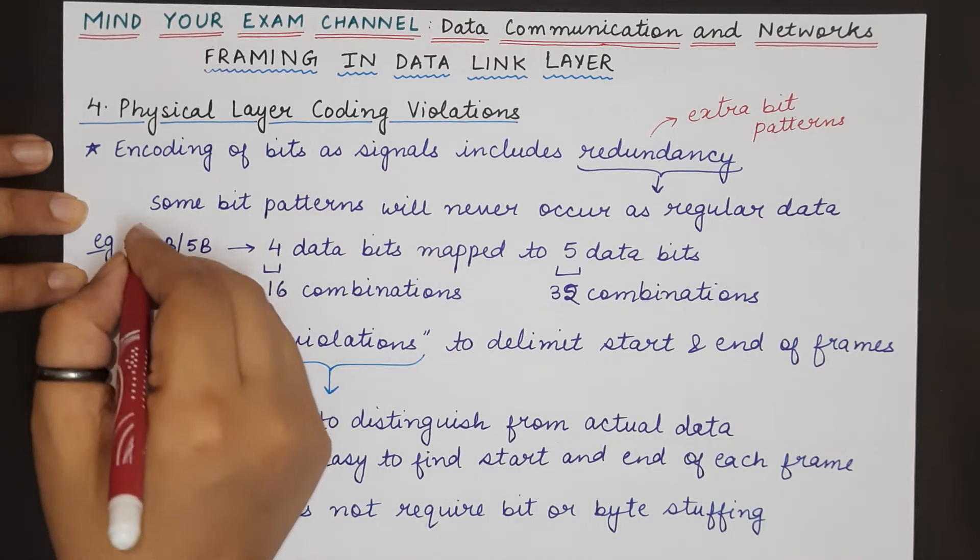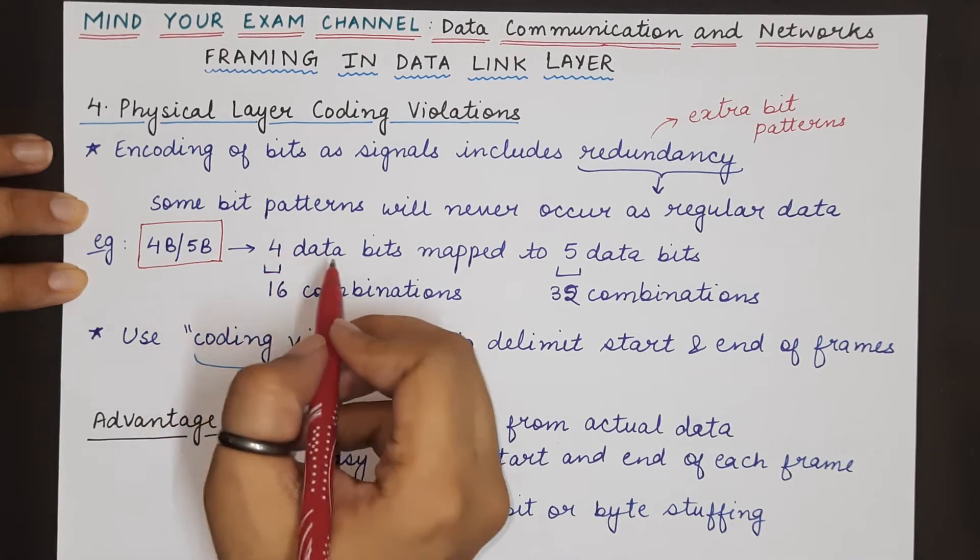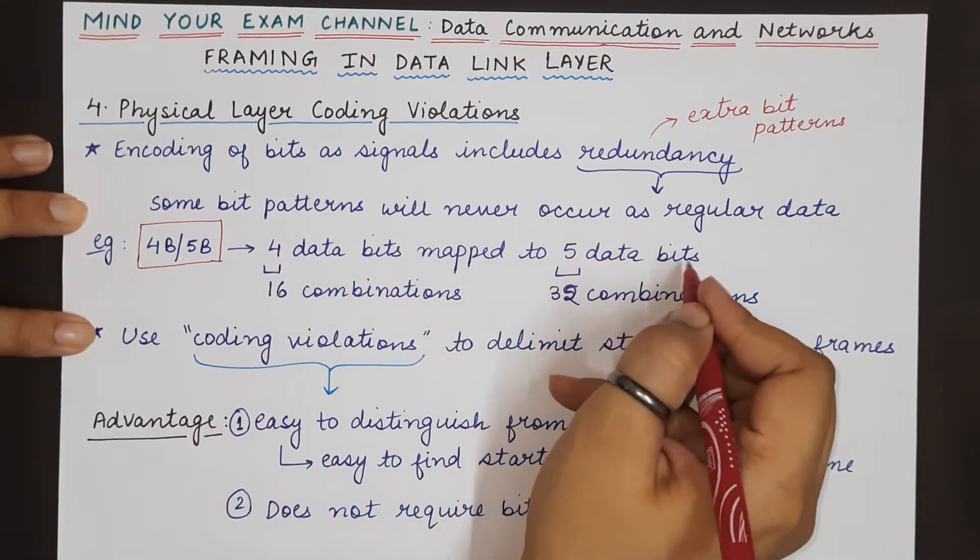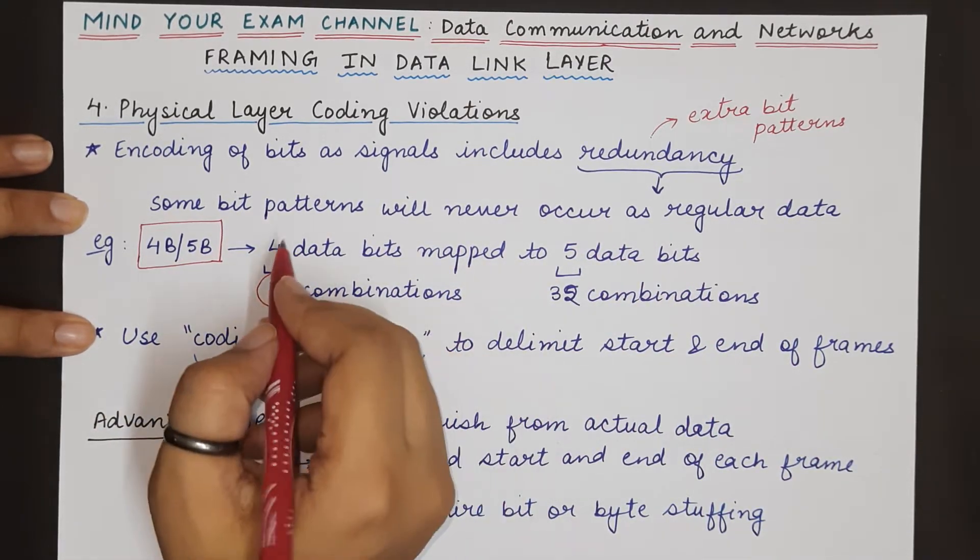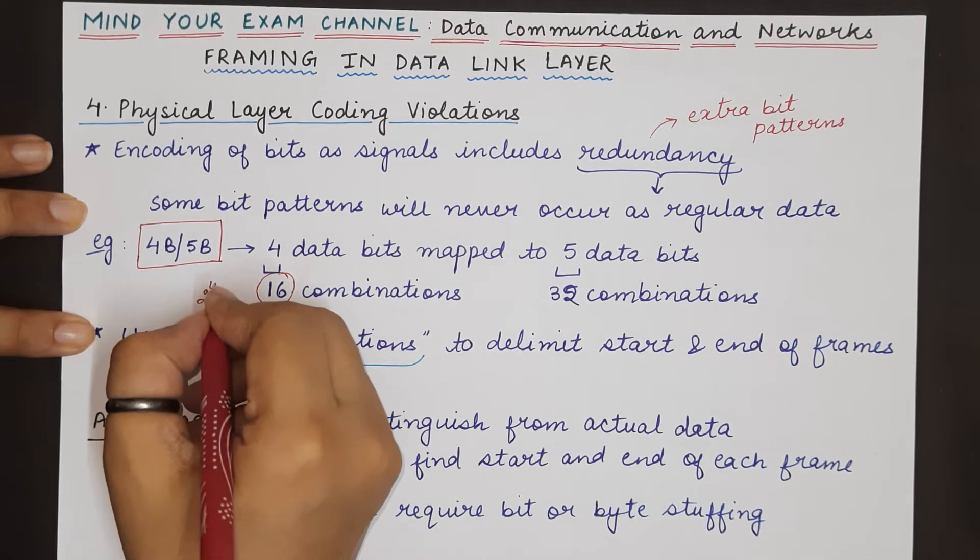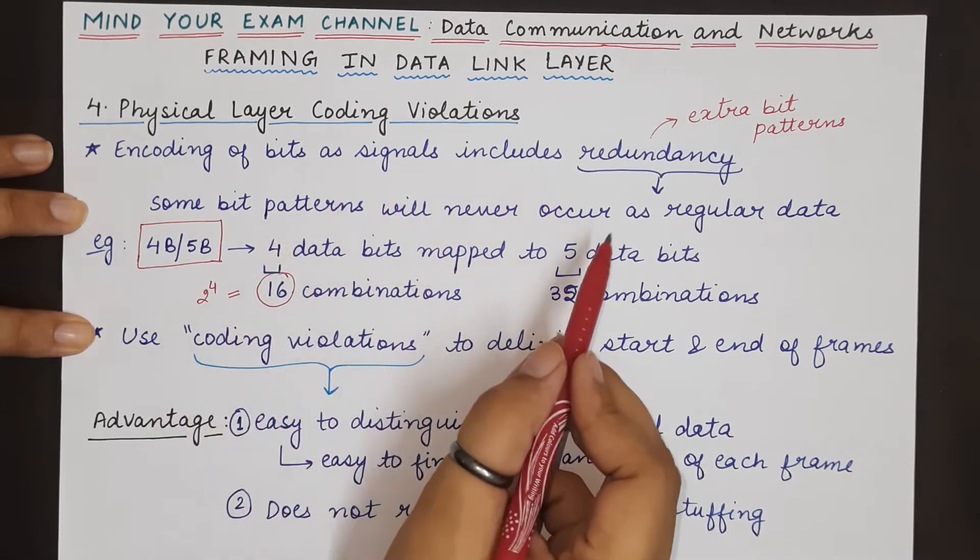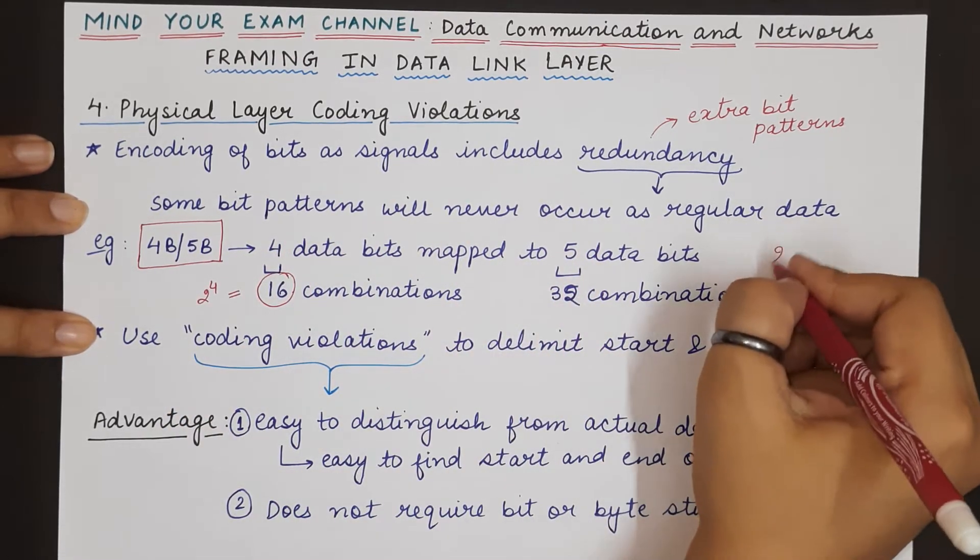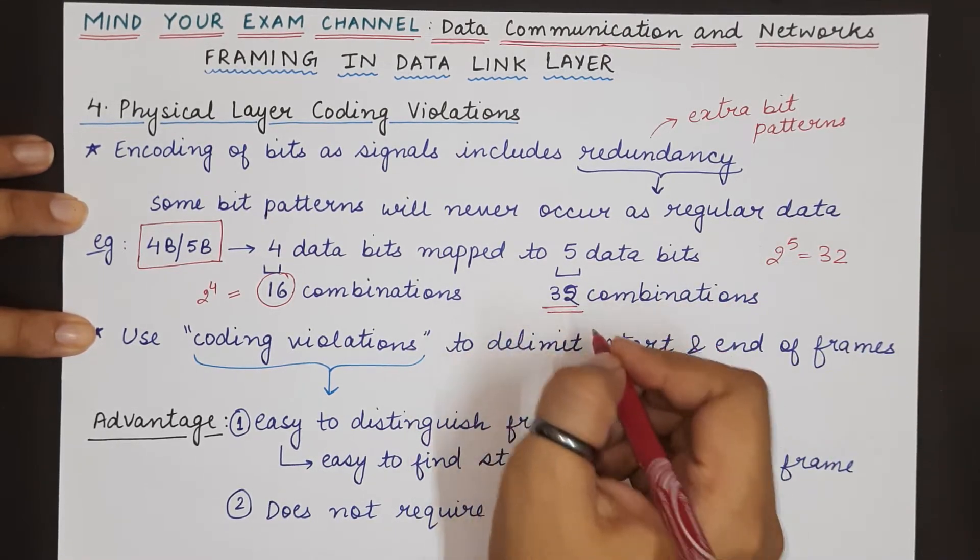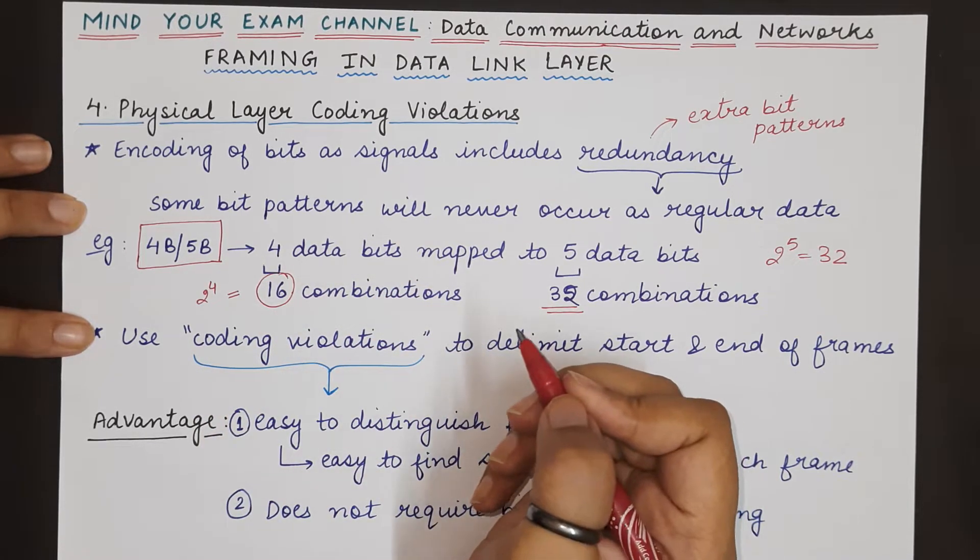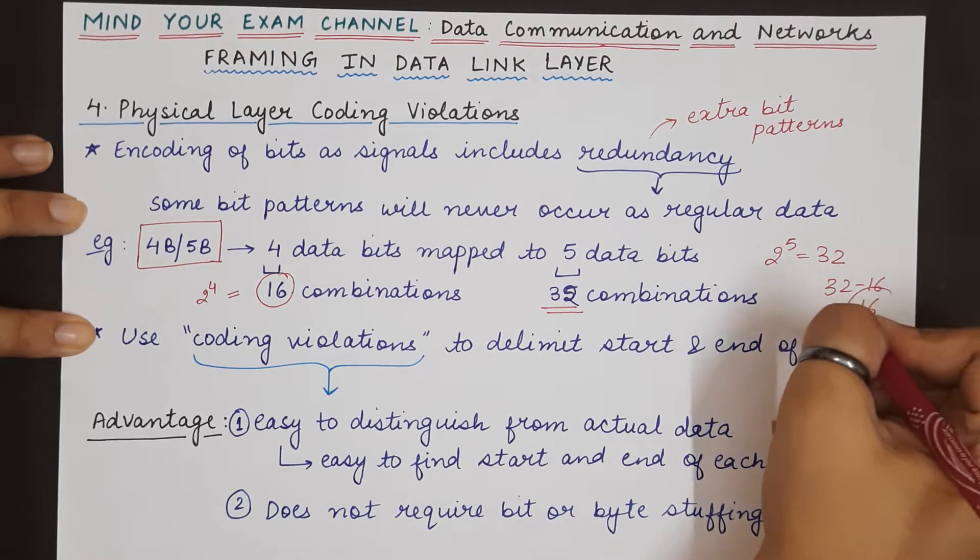For example, we studied this 4b5b encoding technique in which four data bits are mapped to five data bit patterns. That means we have to represent 16 combinations because 2 raised to the power 4 is 16. But since we are mapping the 4-bit patterns using 5 bits, with 5 bits a total of 32 combinations are possible, but we are only representing 16 combinations. So 32 minus 16 equals 16, which means there are 16 5-bit patterns which are never used as data and they are redundant.